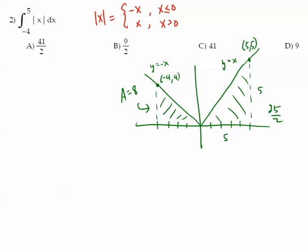So all we really need to do is add together 25 over two plus eight, which is 25 over two, plus 16 over two. And that turns out to be 41 over two. And the answer is A there.